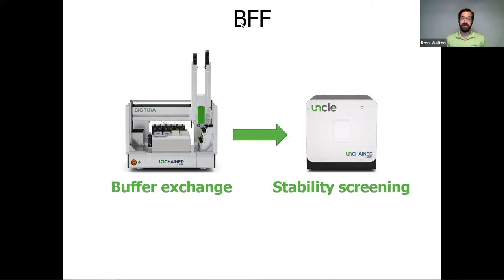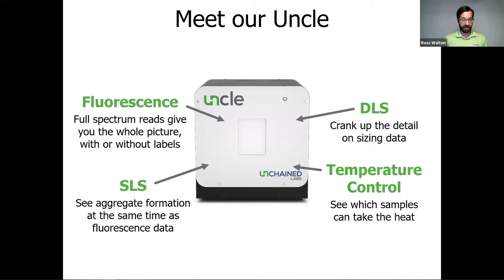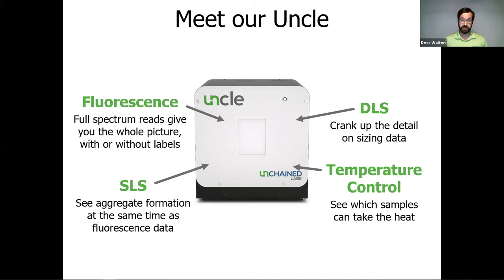I'm Ross Walton, one of the application scientists here at Unchained Labs. UNCLE is an all-in-one multimodal stability platform that contains two different lasers: a 266 nm laser and a 473 nm laser. The 266 nm laser is ideal for looking at capsid protein stability using intrinsic fluorescence, while the 473 nm laser can excite a variety of fluorescent dyes, including DNA-sensitive dyes like SYBR Gold. UNCLE also reads full-spectrum fluorescence, so you get the whole picture of your AAV capsid and its thermal stability — with or without labels, depending on what you need.